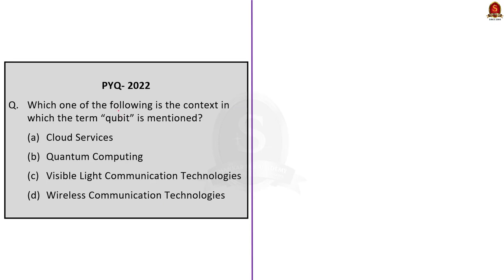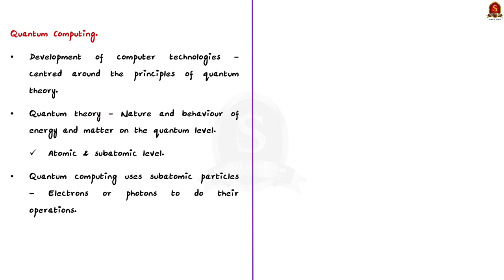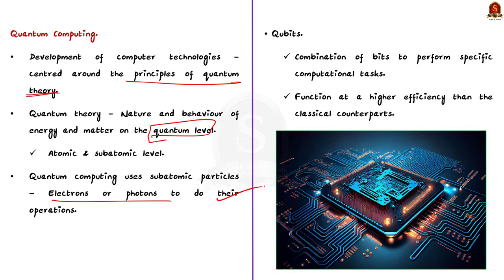In this previous question, they are asking about the qubit. Quantum computing deals with the development of computer technologies centered around the principles of quantum theory, which explains the nature and behavior of energy and matter at the atomic and subatomic level. Quantum computing uses subatomic particles such as electrons or photons for operations, and uses a combination of bits called qubits to perform computational tasks, helping quantum computers function at higher efficiency than classical counterparts.